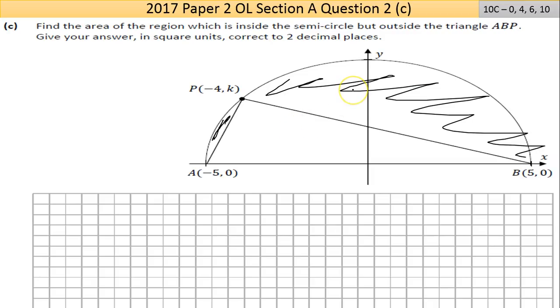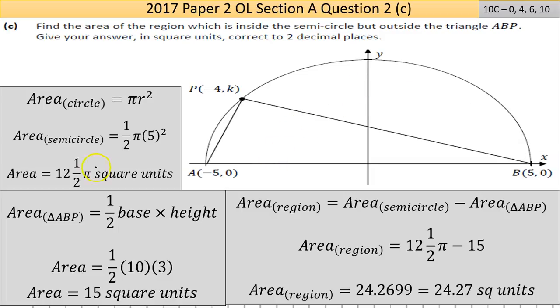This is a classic junior cert question. If you have the area of the semicircle, take away the area of the triangle, you have the area of the shape. So the area of the shaded region is the area of the semicircle take away area of the triangle APB. So I'm going to break it down. The formula is πr². The area of the semicircle is a half times πr². I put the units in there - the radius of the semicircle is five.